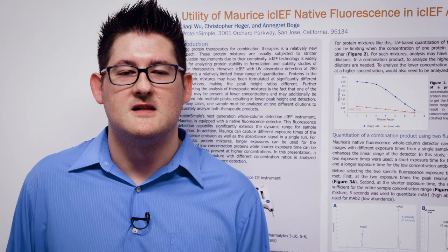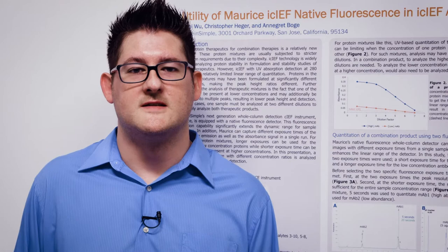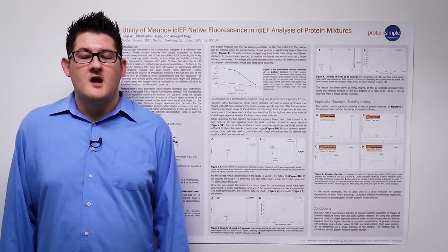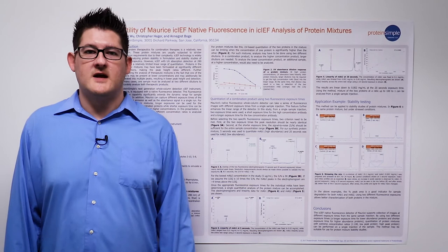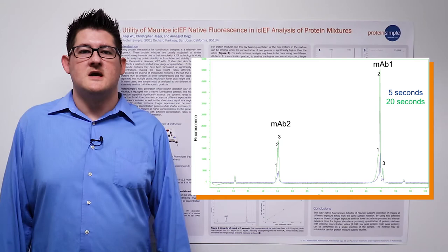Being able to use different fluorescence exposure times allows us to use a short exposure for the high-concentration antibody and a longer exposure for the low-concentration antibody. When selecting the two specific fluorescence exposure times to be used, two criteria need to be met, which we show in Figure 3.